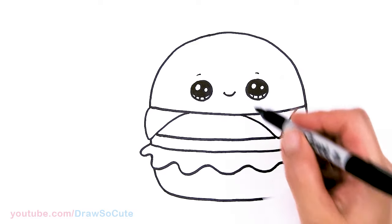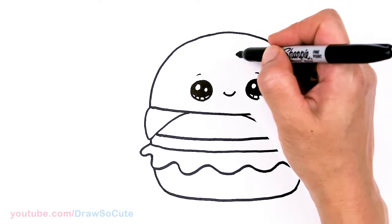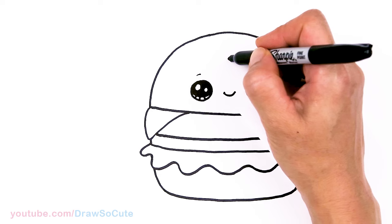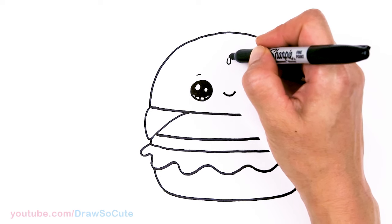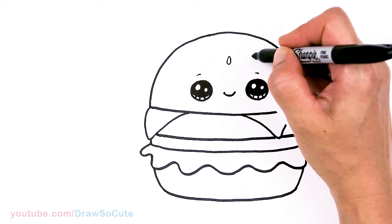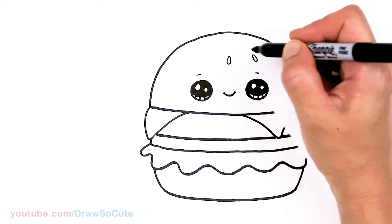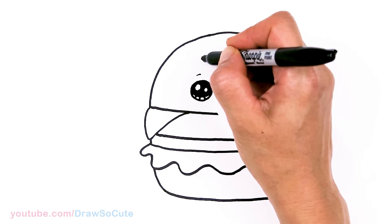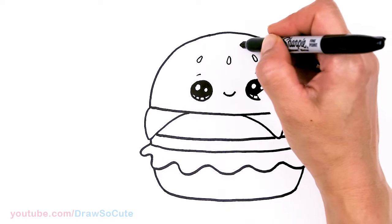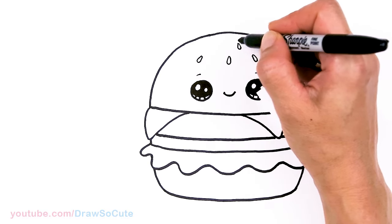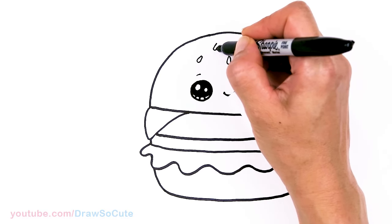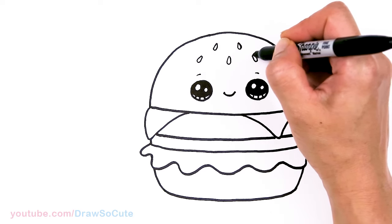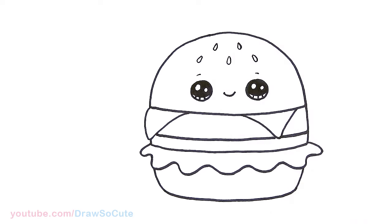And if you like sesames on your buns, we're going to add that right now. So I'll just start in the center to make it a little bit easier. And I'll just go ahead and draw two more on the sides. And two more on the top. There. So kind of like teardrop, raindrop shapes.